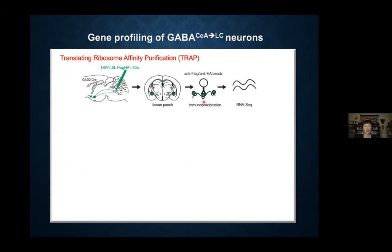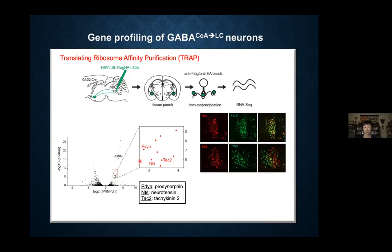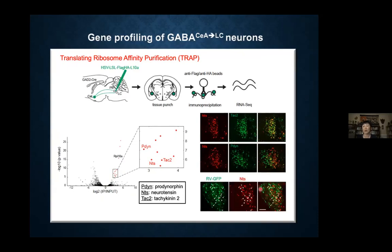We used sequencing for that purpose. This is the same volcano plot. Zooming into the highly significantly enriched box, again a bunch of genes, and we saw three neuropeptides: prodynorphin, tachykinin-2, and neurotensin. They actually partially overlap with each other. We decided to focus on neurotensin because it shows the highest degree of overlap with the rabies-labeled presynaptic neurons.